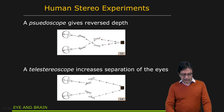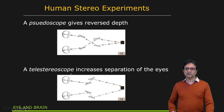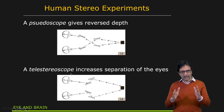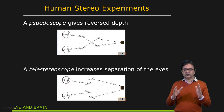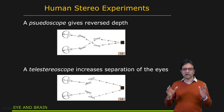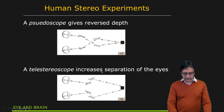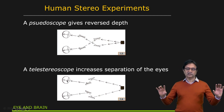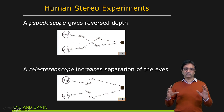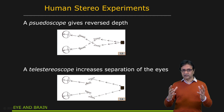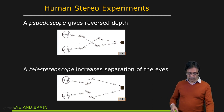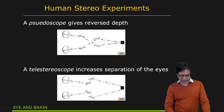Other experiments have used the telestereoscope, which again uses mirrors to redirect light so that the effective interocular distance between the two eyes can be adjusted. Using this contraption, the eyes receive images as if they were further apart from each other than they really are, which has the effect of making objects appear much smaller or much larger.